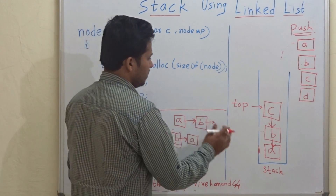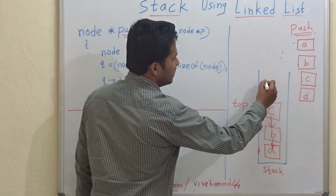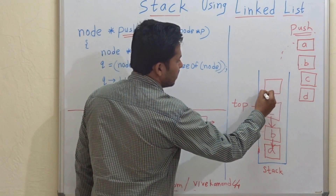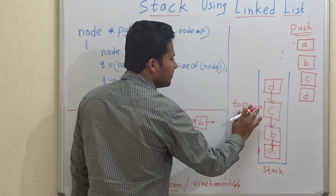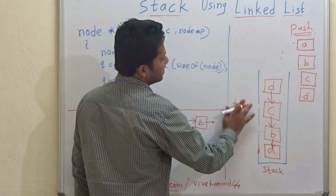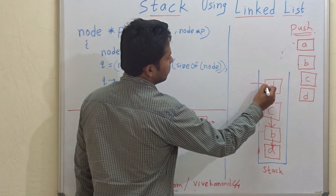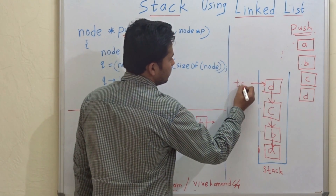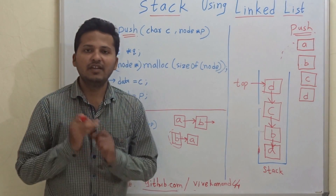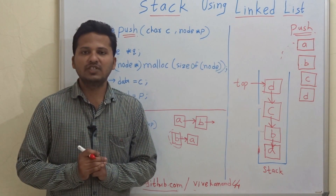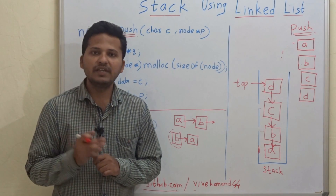So now let's push the fourth element D. The next pointer of D will point to the previous node that was C, and D will become the new top node. This is how we created the stack using linked list.